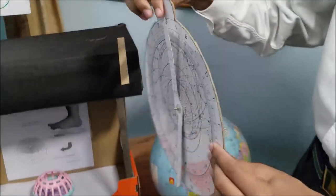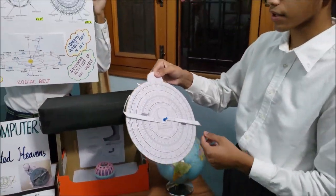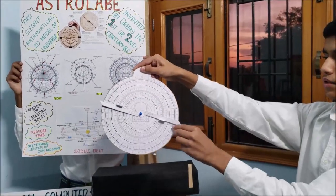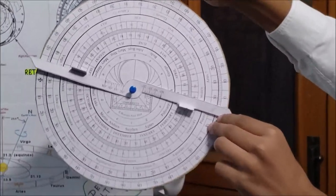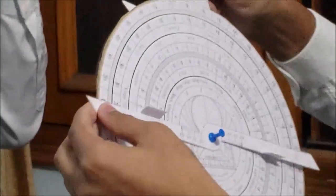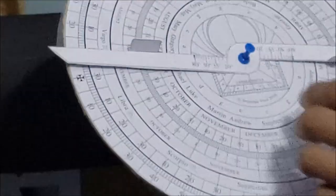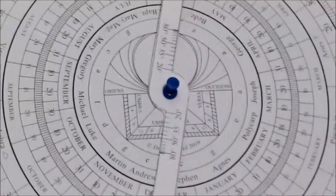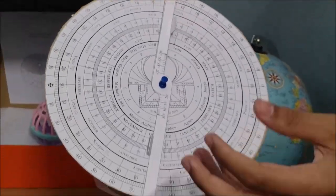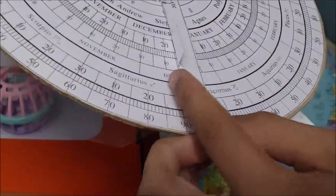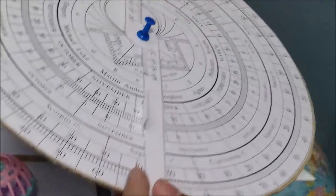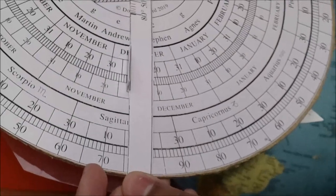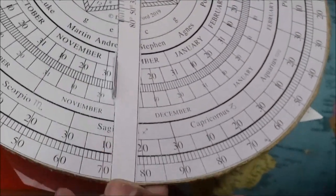Now I will tell you how to determine the local time using the astrolabe. First you have to keep the astrolabe at eye level and then using the alidade you have to measure the altitude of the sun which is right now let's suppose 10 degrees. And now using the alidade you also measure the degree of the sun in the current constellation. So today's date is November 25th and you can see that it is approximately in Sagittarius 10 degrees.